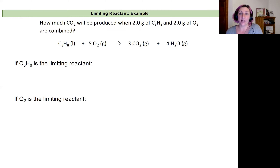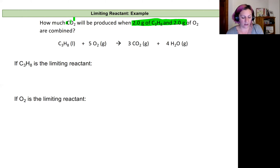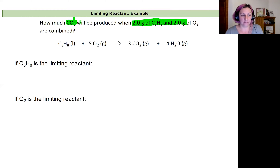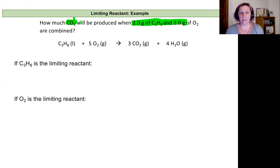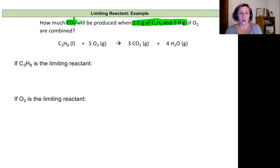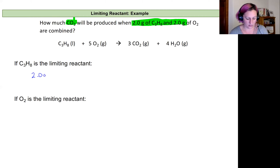In this example we're going to combine two grams of propane with two grams of oxygen and we want to know how much carbon dioxide will be produced. The red flag that this is a limiting reactant problem is that I'm given two masses for my reactants and asked about a product. To predict the amount of product I have to choose which reactant to base that prediction on — that's where the limiting reactant piece comes in.